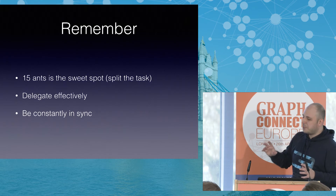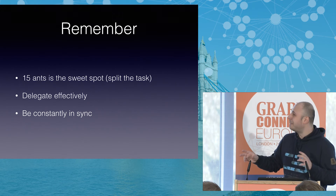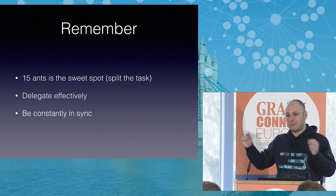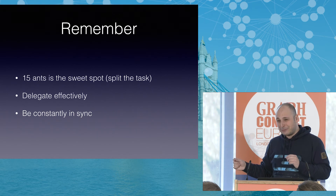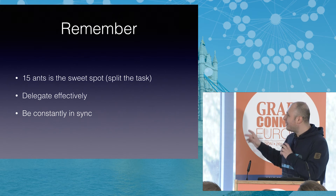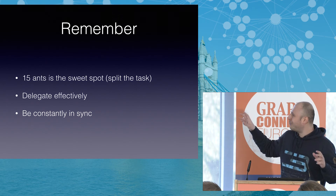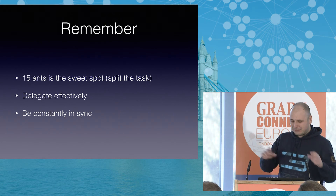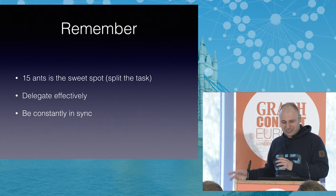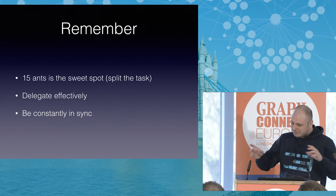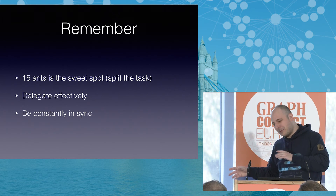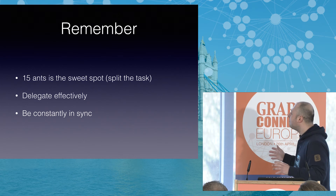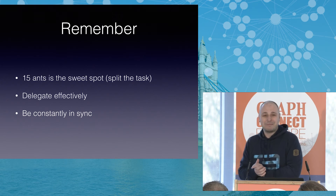This concludes our presentation. If you remember the ants — the article said 15 ants is the sweet spot to move the breakfast cereal. You need to split the task, you also need to delegate efficiently, and always be constantly in synchronization. And Neo4j is perfect for modeling this. That is it. Thank you.